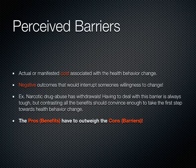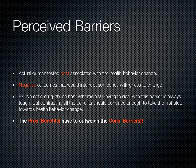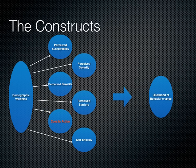The fourth construct is perceived barriers — the actual or perceived costs associated with the health behavior change. This is all about what you have to give up for this behavior change: the negative outcomes that would interrupt someone's willingness to change. Using the narcotic drug example, withdrawal is a huge barrier for people that want to quit. However, contrasting all the benefits against the barriers should convince enough people to take the first step. The pros and benefits have to outweigh the cons.